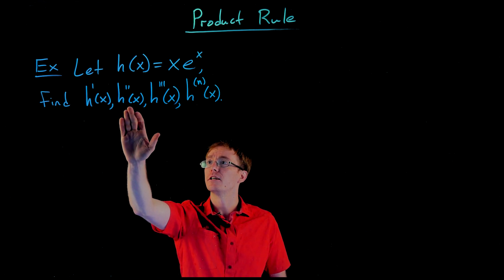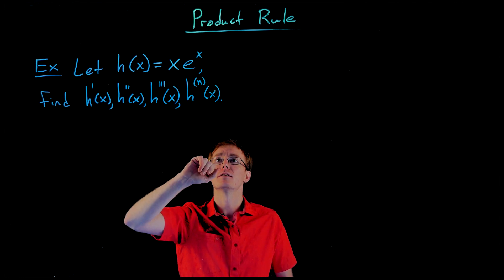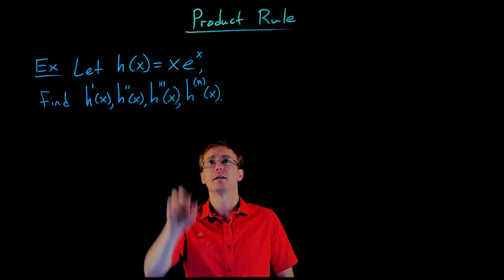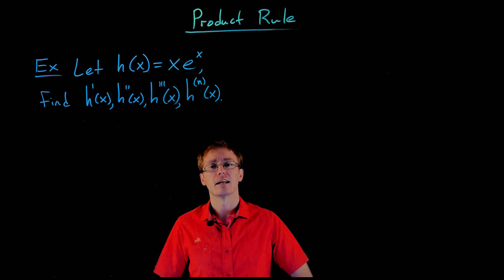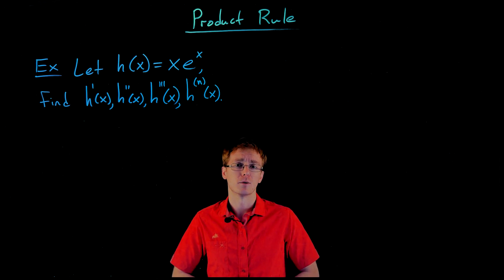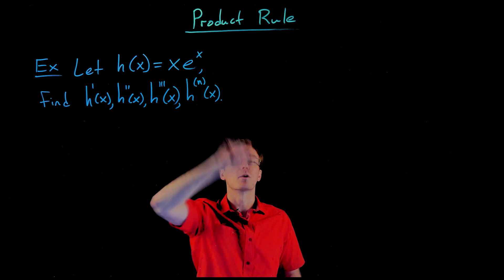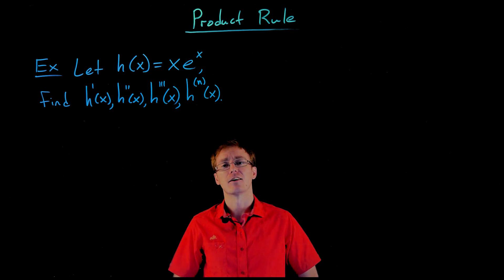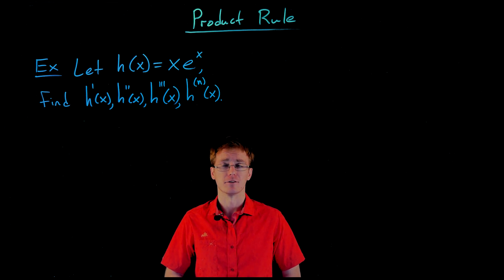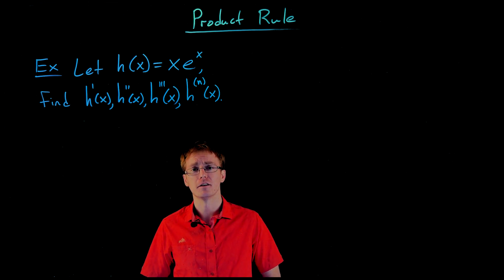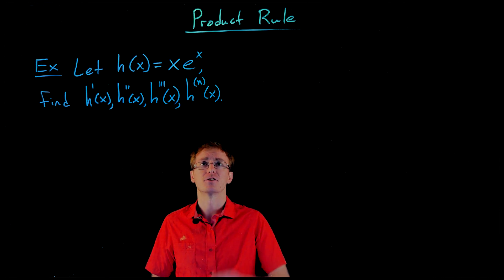So remember this is asking us to find the first derivative, the second derivative, the third derivative. Once we're past the third derivative we switch our notation a little bit, putting parentheses in that superscript where the number inside indicates which derivative we are taking. That n is telling us we're asking for the nth derivative. The idea is that after finding the first three derivatives we might be able to find a pattern that'll help us take a shortcut to the nth derivative.